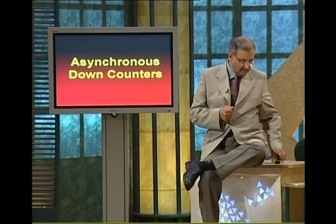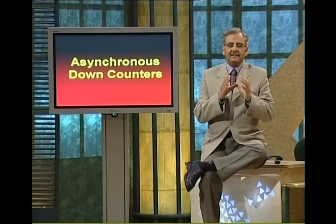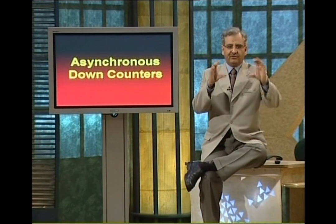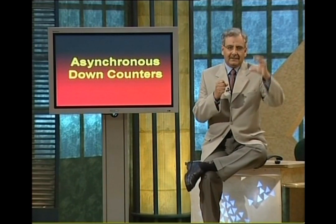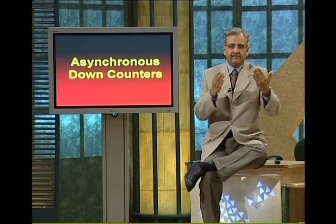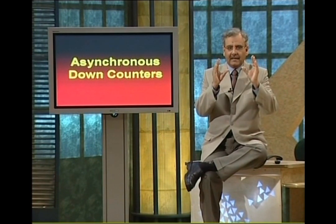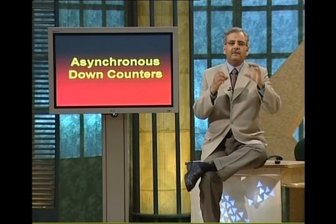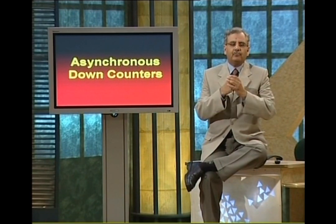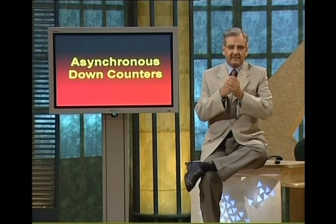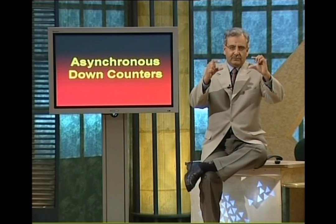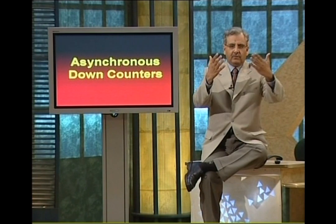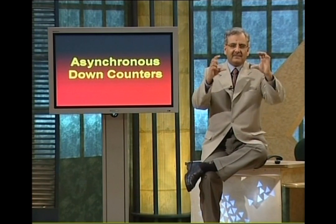How is a down counter built? The difference between a down counter and an up counter is not much. In an up counter, all flip-flop inputs are permanently connected to logic 1, and the Q output of each flip-flop is connected as the clock for the next flip-flop. In a down counter, the Q-bar — the complementary output — of each flip-flop is connected to the clock input of the next flip-flop. So whenever you apply a clock pulse, the counter counts downward. Let's look at the circuit diagram and also the timing diagram.